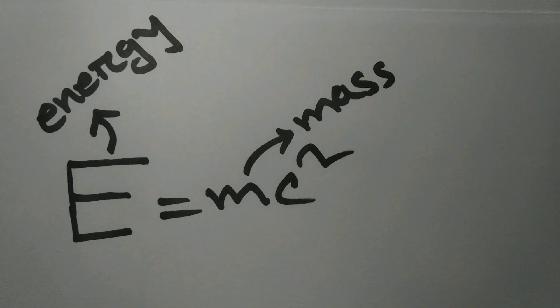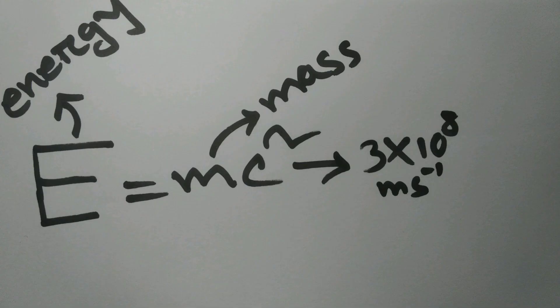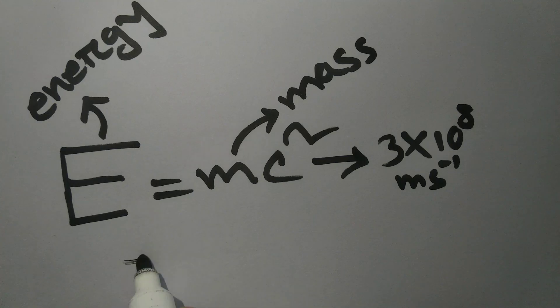This equation is known as the energy-mass equivalence equation, where m is the mass and E is energy. C is the velocity of light, which is a constant. On the most basic level, it simply says that energy and mass are interchangeable.